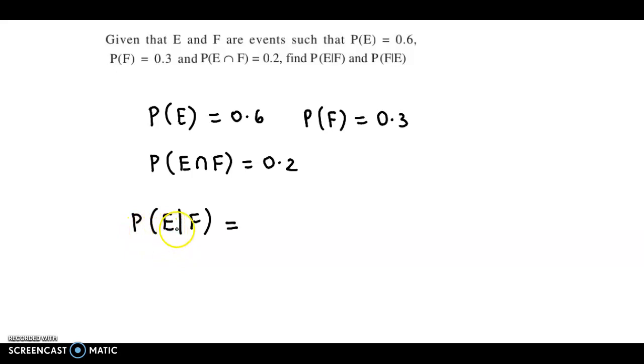Probability of E given F is obtained as probability of E intersection F upon probability of event F. Now, E intersection F has probability 0.2 and probability of F is 0.3. Simplifying this, we get the answer as 2 by 3.